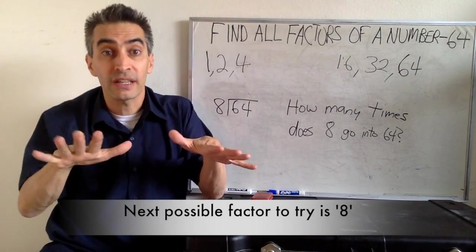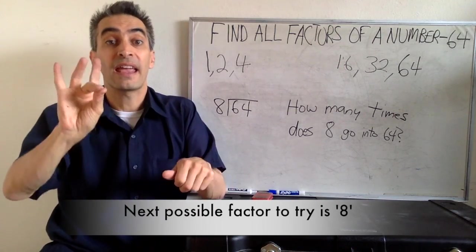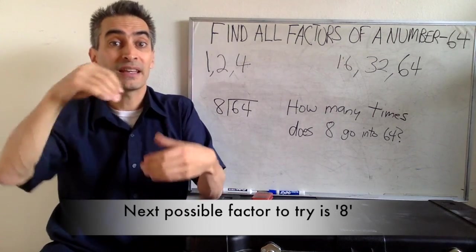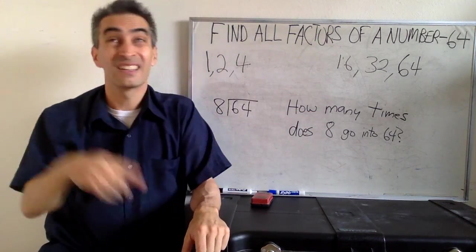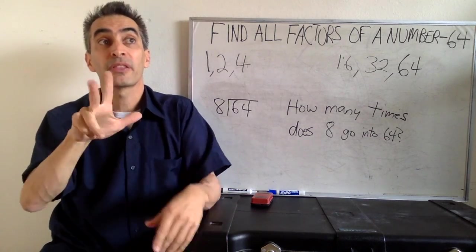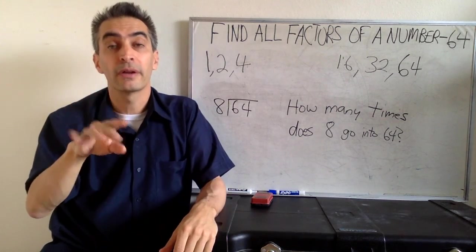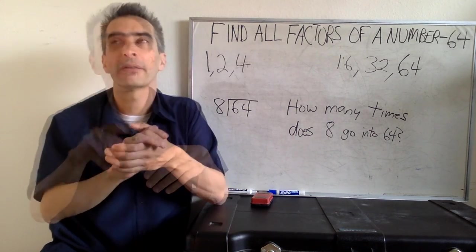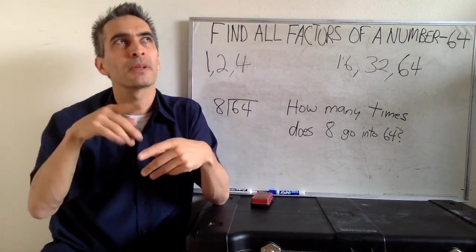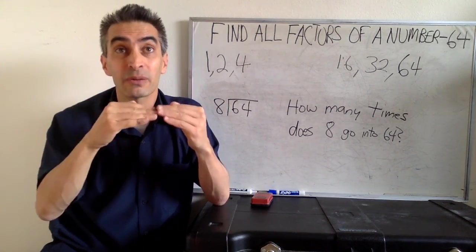Okay. Well, we can't give up. We're almost finished. Next, we're going to try 8. How many times does 8 go into 64? Let's think on this. 8 times 3 equals 24. 8 times 4 equals 32. 8 times 7 equals 56.